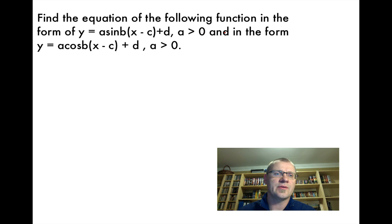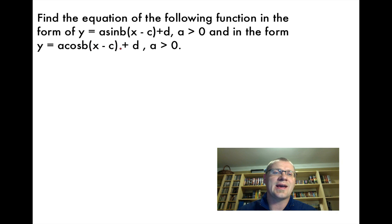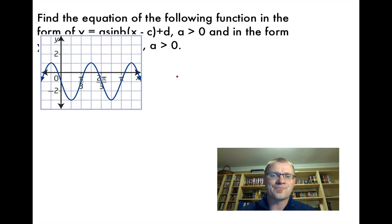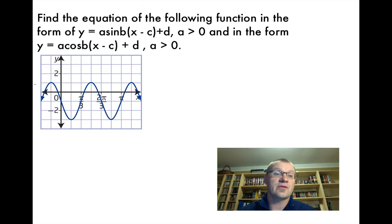Our second example asks us to find the equation of a given graph in the form y = a sin(b(x − c)) + d, where a > 0, and also in the form y = a cos(b(x − c)) + d, where a > 0. We need to find the values for a, b, c, and d.